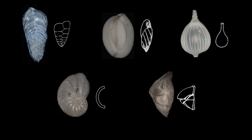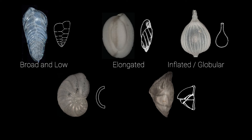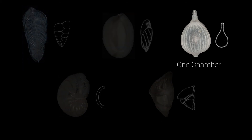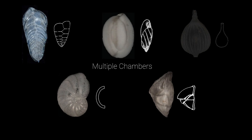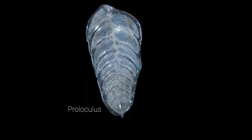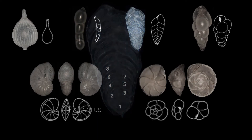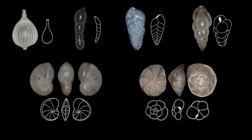Most foraminifera grow by adding chambers to their shell to accommodate the growing cellular material that makes up the organism itself. Sometimes the chambers are shaped like short and broad boxes, and other times they are long and thin, with the long axis of the chamber parallel with the long axis of the overall foraminifera. The chambers may also be inflated and globose, with rounded chamber walls shaped like arches, or have walls that meet at sharp angles. Some foraminifera have only one chamber, while others may have dozens of visible chambers. The first initial chamber, or proloculus, is nearly spherical in shape, and chambers are added as the foraminifera grows. The pattern by which chambers are added determines the overall shape of a foraminiferal shell and varies across genera — this is one of the most important morphological characteristics to recognize when trying to identify a foraminifera.